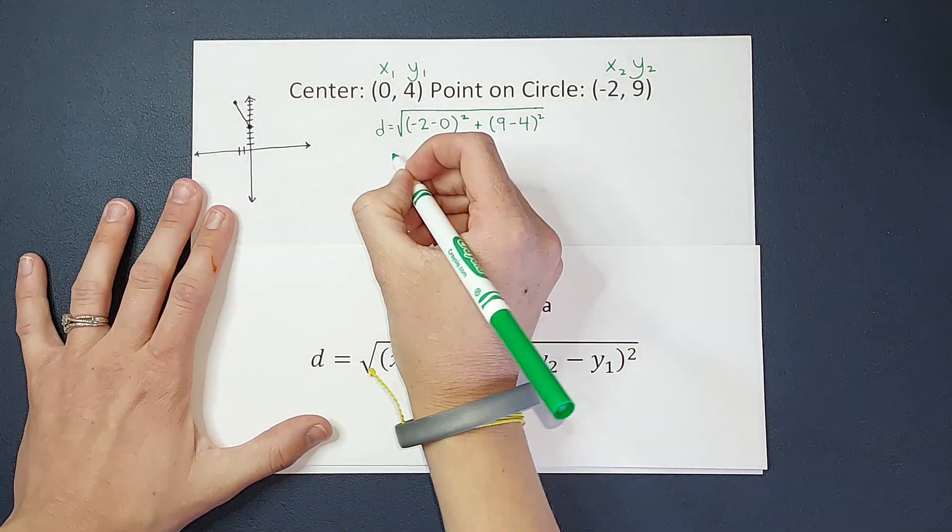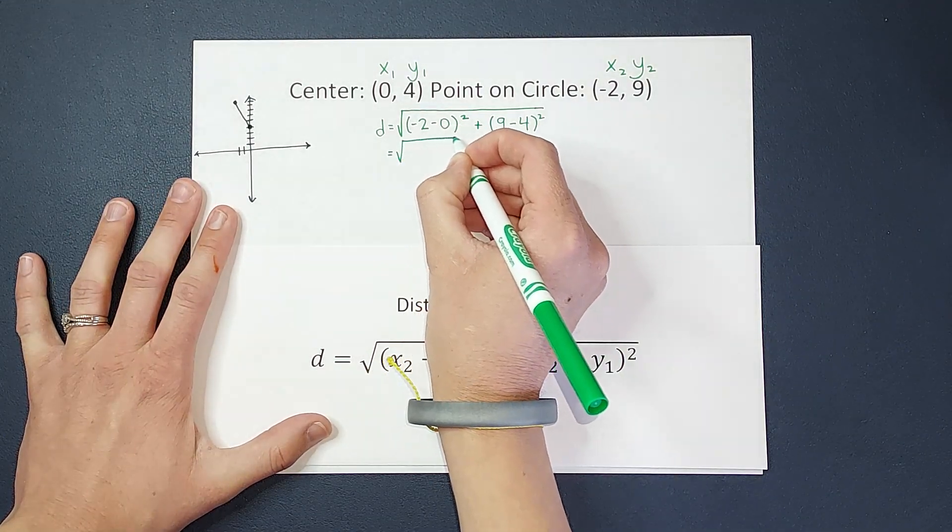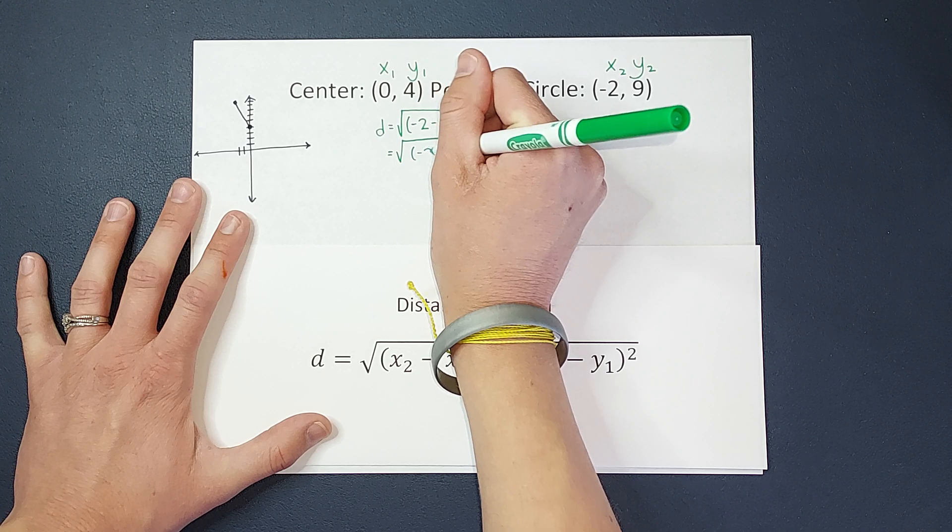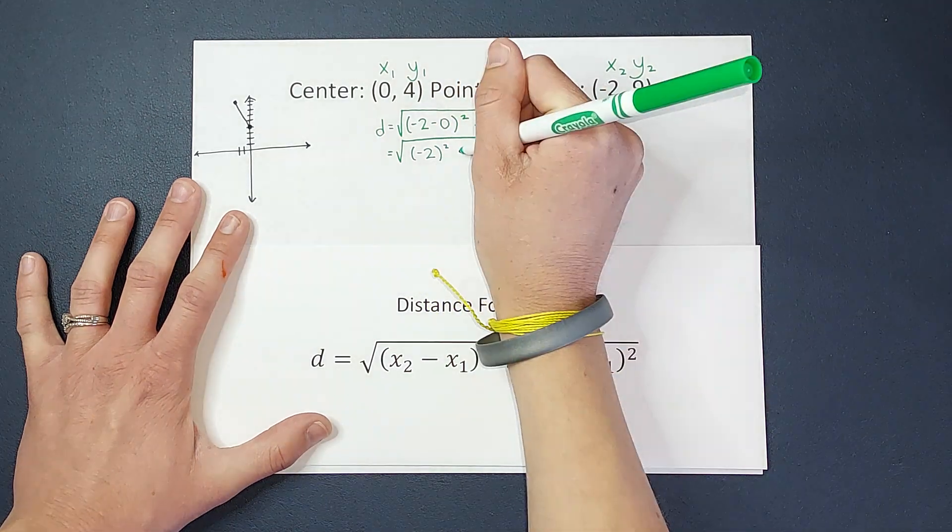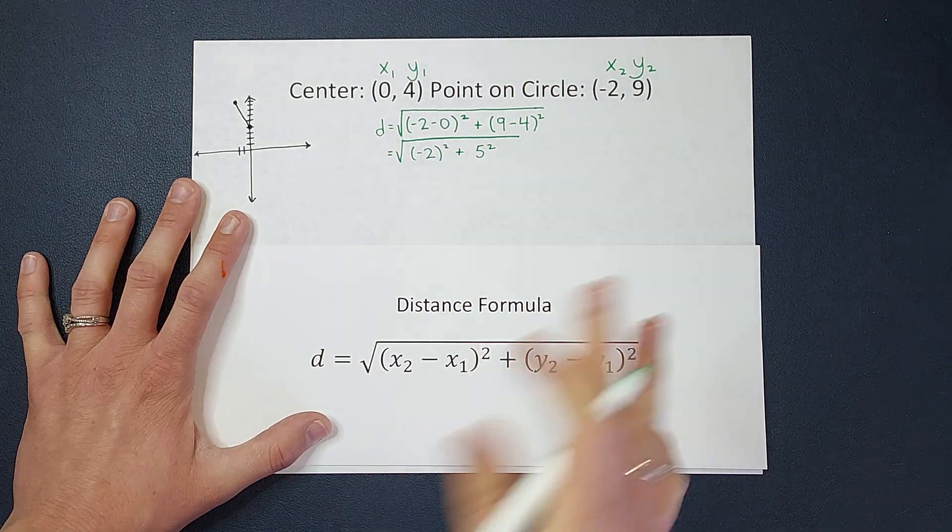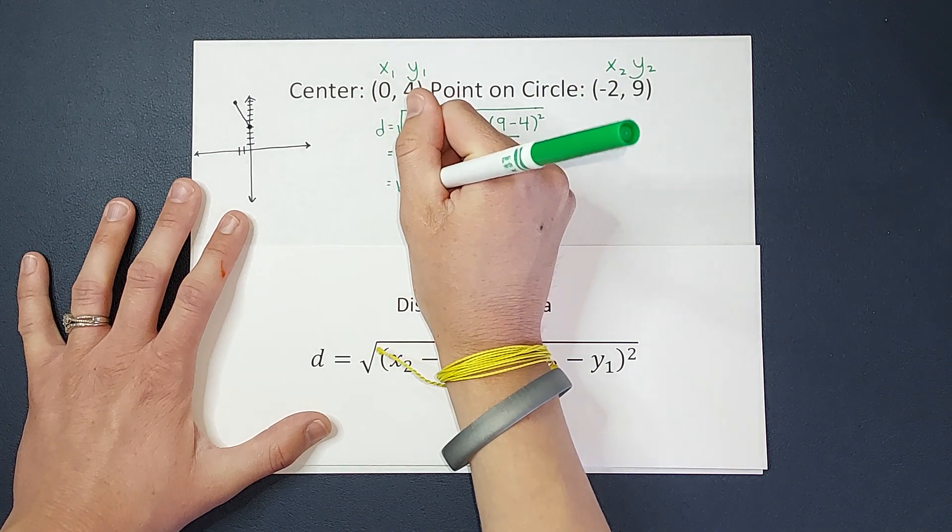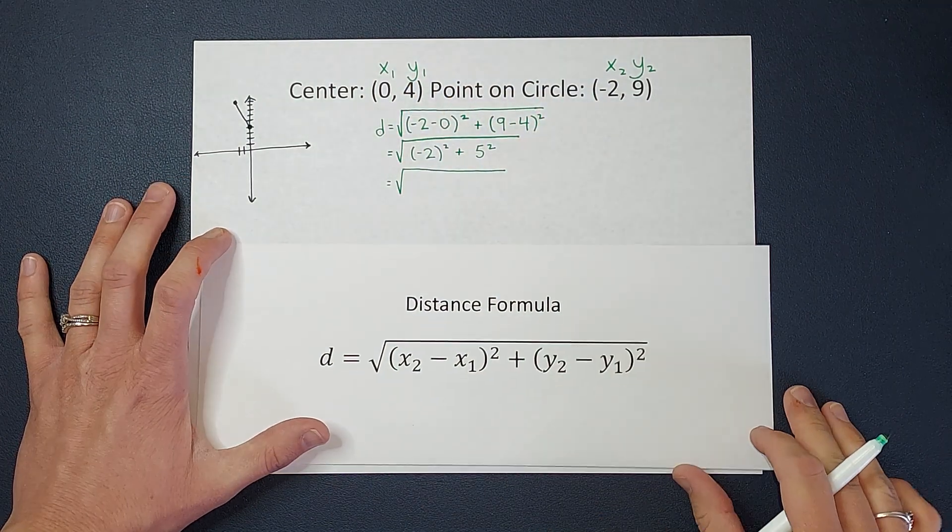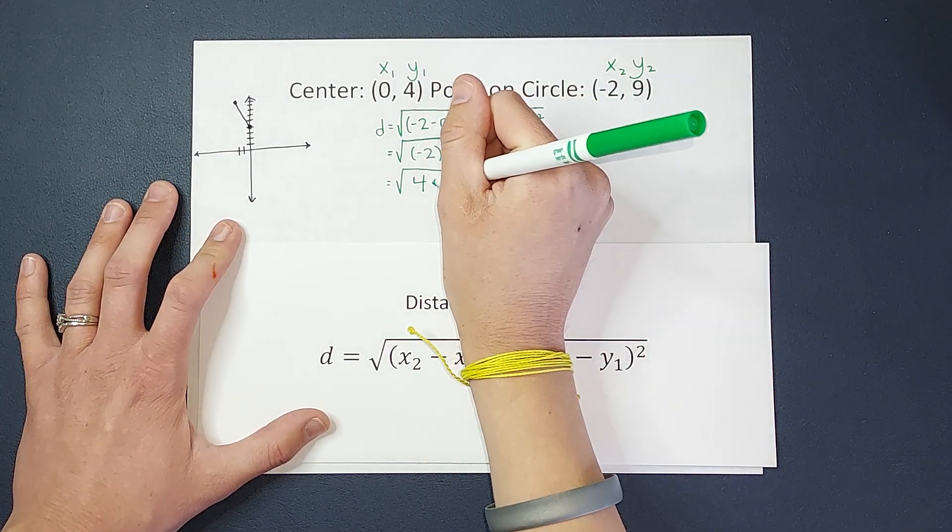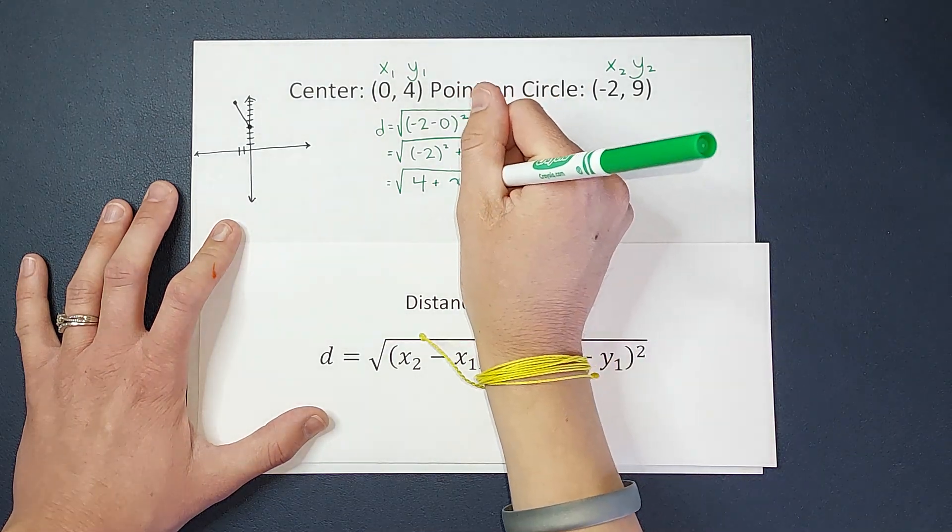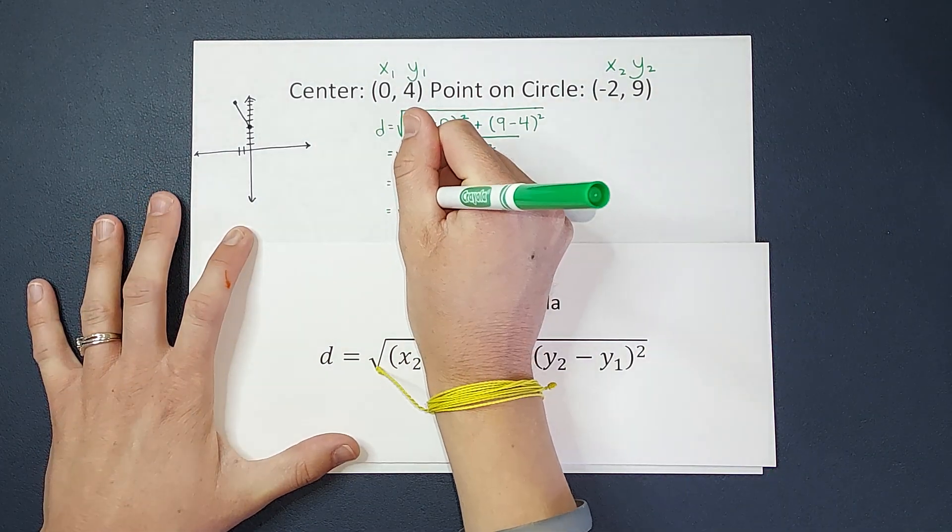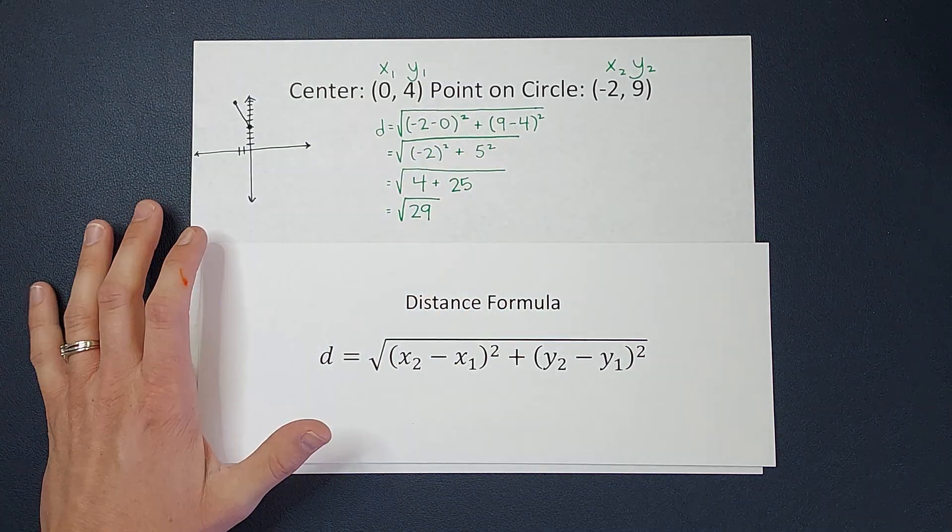Now let's simplify this down a little bit. So I'm going to have the square root of -2 minus 0 is just -2. So I'm going to have (-2)² plus 9 minus 4 gives me 5, so I'm going to have 5². It's looking a little less scary already. Now we're going to have the square root of (-2)² is -2 times -2, so that gives me a positive 4, plus 5² is 5 times 5, which is 25. So now I've got 4 plus 25, which gives me the square root of 29.